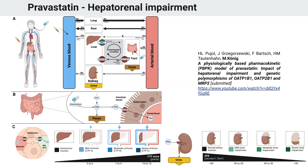This is an important question in the context of dose adjustments and whether we have to be careful in treatment of certain subgroups, especially people who have hepatorenal impairment. This model consists of a whole body model for pravastatin distribution. In the liver, pravastatin can be taken up and then later secreted in the bile and via the enterohepatic circulation through the intestine and excreted in the feces. On the other hand, it can be excreted via the urine.